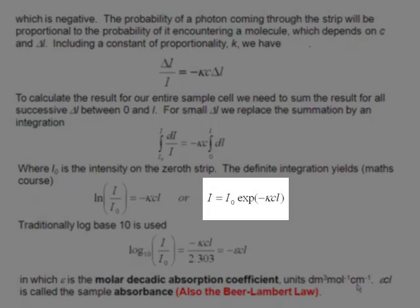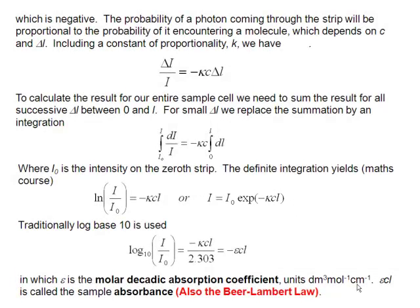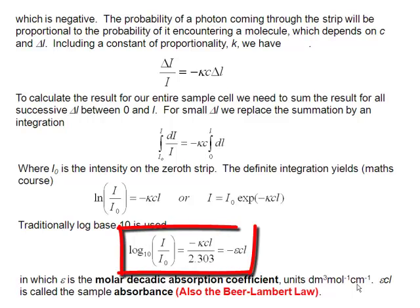I is equal to I0 e to the minus kCL. The traditional way to assess logarithm of I over I0 is to use logs to the base 10. So we write that as logs to the base 10, and that means on the right-hand side, we have to make a correction, dividing by 2.303. And so we include that 2.303 correction into our constant of proportionality, which was k, and that now becomes epsilon. Epsilon is just k divided by 2.303.